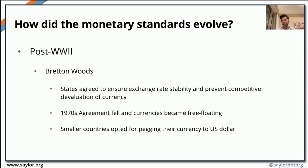Post-World War II, we had a different system — the Bretton Woods standard, which was basically the basis for the creation of the IMF, or the International Monetary Fund. The Bretton Woods system aimed at standardization and stability of currency exchange rates, essentially trying to prevent competitive devaluation of currencies. However, in the 1970s the agreement did not work, countries started to withdraw, and the currencies that were part of the Bretton Woods agreement became free-floating currencies.